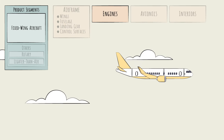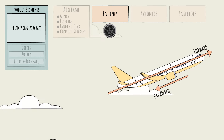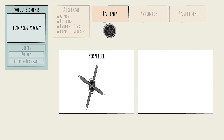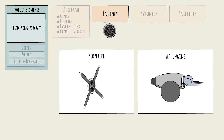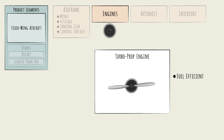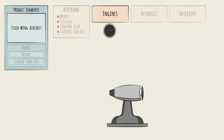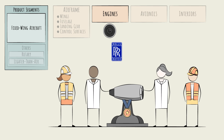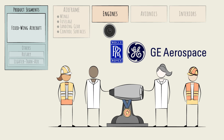One of these systems is the engine, which generates thrust. There are two principal types of engines: propellers, which spin and move air backward to drive the plane forward, and jet engines, which draw air in, compress it with fuel, and ignite the mixture to create a blast. There are also turboprop engines, which combine the two. Turboprops are highly fuel efficient, especially at the lower speeds used for regional flights. Engines are massive engineering feats in their own right, and are produced by a separate set of players like Rolls-Royce and General Electric, or GE, Aerospace.